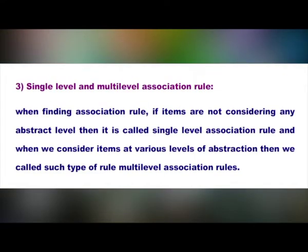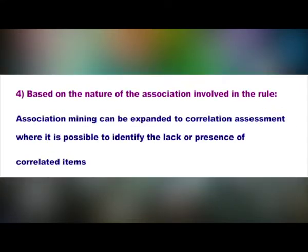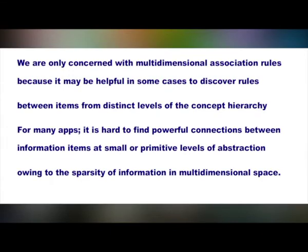The third type is single-level and multi-level association rules. When finding association rules, if items are not considering any abstract level, then it is called a single-level association rule. When we consider items at various levels of abstraction, then we call such types of rules as multi-level association rules. The fourth type is based on the nature of the association involved in the rule. Association mining can be expanded to correlation assessment, where it is possible to identify the lack or presence of correlated items. We are particularly concerned with multi-dimensional association rules, as it may be helpful to discover rules between items from distinct levels of the concept hierarchy.